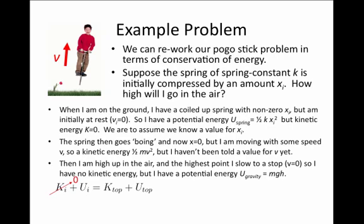Initially our kinetic energy is zero and at the very top of the arc our kinetic energy is also zero. Our potential energy at the beginning, one-half k xi squared, has to equal our potential energy at the top of the arc, which is mgh.